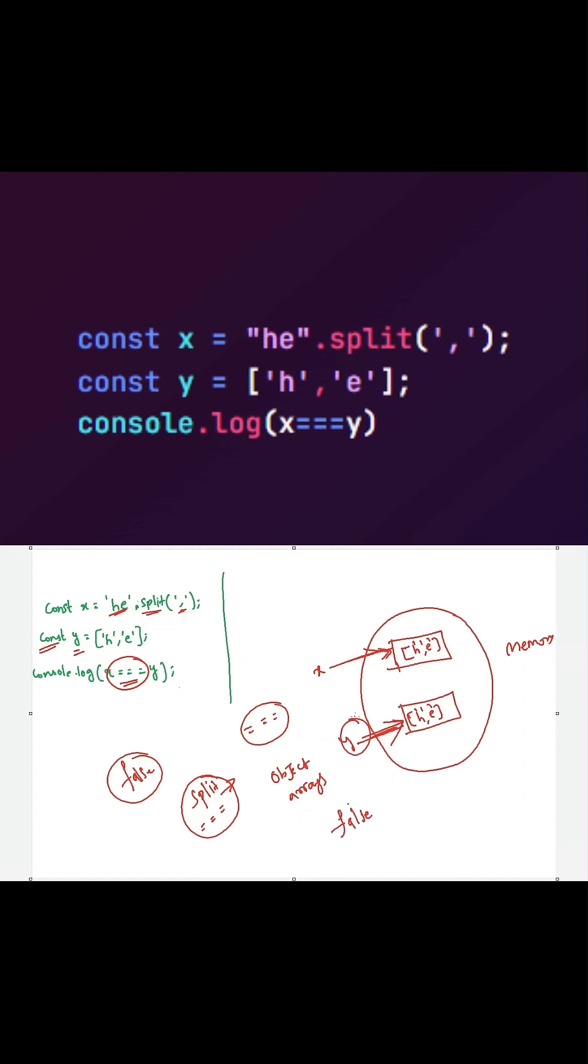If this y is pointing out to the same location, then it will become true. But it's not, right? So that's the reason it is returning false to us.